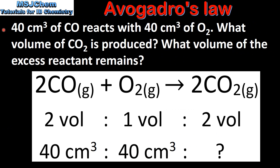Next we'll have a look at some examples using Avogadro's Law. In our first example, 40 cm³ of carbon monoxide reacts with 40 cm³ of oxygen. What volume of carbon dioxide is produced and what volume of the excess reactant remains?